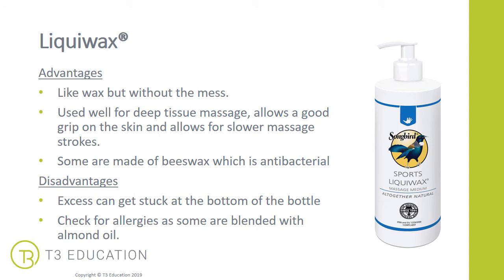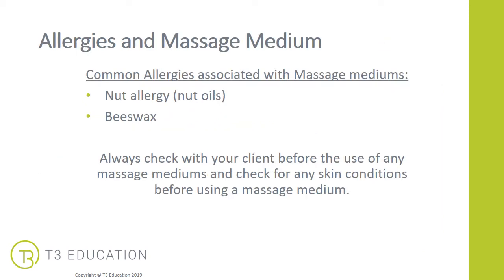Liquiwax is a new type of wax from Songbird. Songbird have always done massage waxes in tubs, and they created this Liquiwax which combines the properties of lotion, oil, and wax together. It's like wax but without the mess — you don't need to scoop it with a tool; you can use a pump action like normal lotion. It still has a really good grip, making it great for deep tissue work and slower massage strokes. It's made with beeswax so it's antibacterial. The main disadvantage is that the excess can get stuck at the bottom of the bottle and the pump doesn't work towards the end.